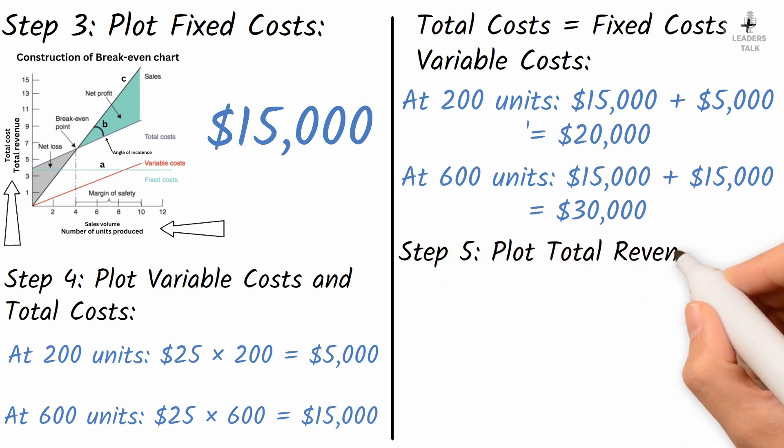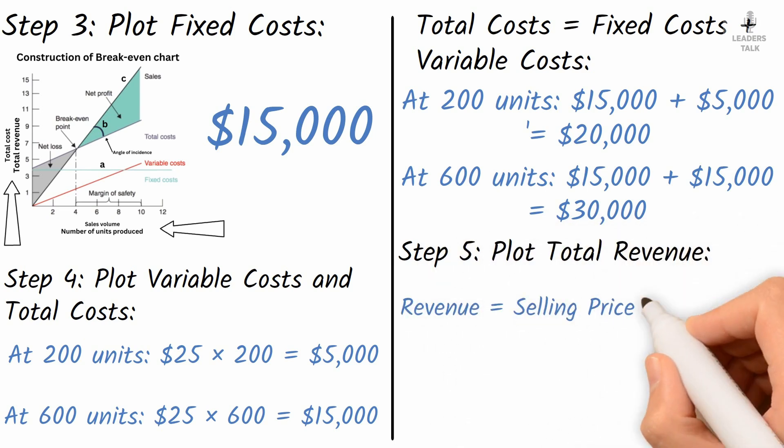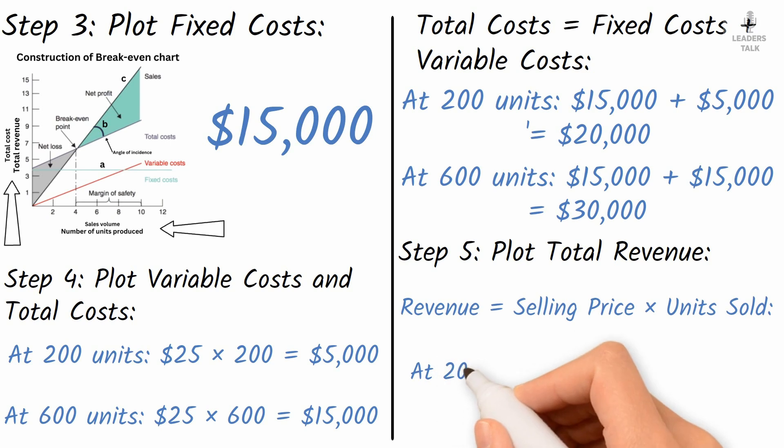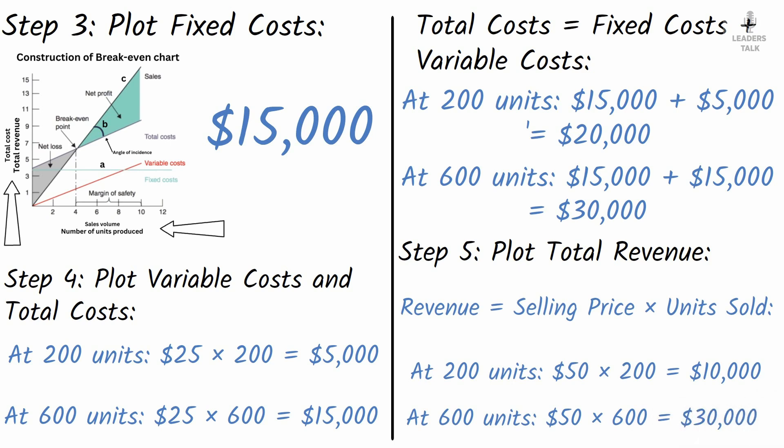Step 5: Plot total revenue. Revenue equal selling price into units sold. At 200 units, $50 into $200 equal $10,000. At 600 units, $50 into $600 equal $30,000.